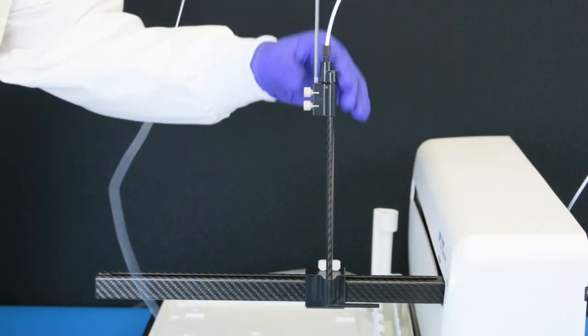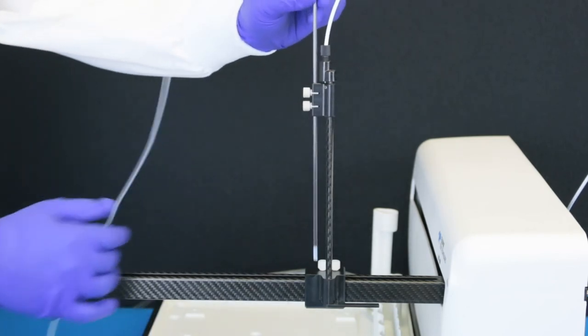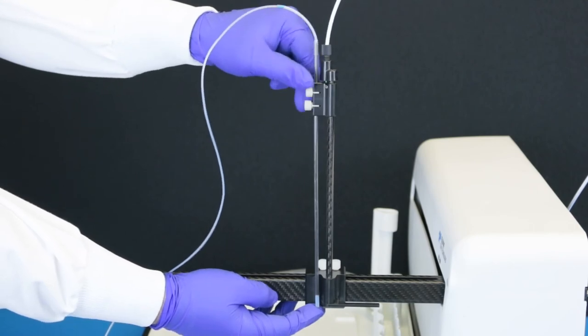Guide the probe straight down through the z-axis slider until the tip of the probe is level with the bottom of the z-drive. Tighten the probe clamps.